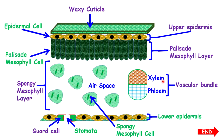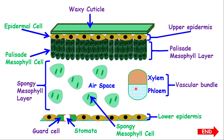The vascular bundle is made up of two vessels: the xylem and the phloem. Note that for the leaf, the xylem is on the top or the uppermost part of the vascular bundle, and the phloem is at the bottom. In different parts of the plant — such as the roots and the stem — they will be organized differently.